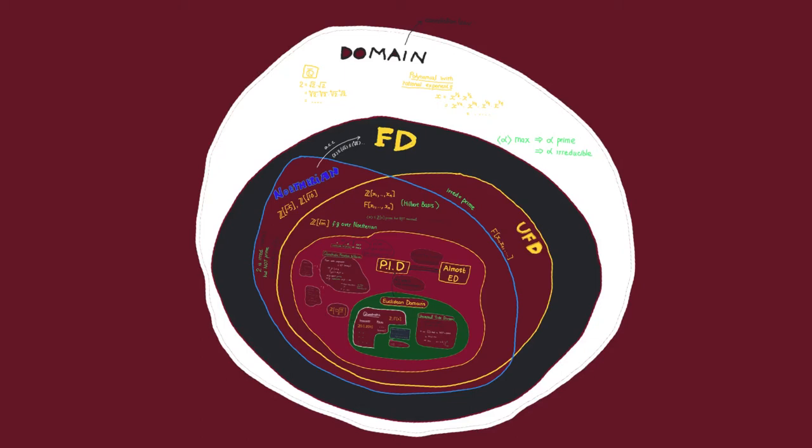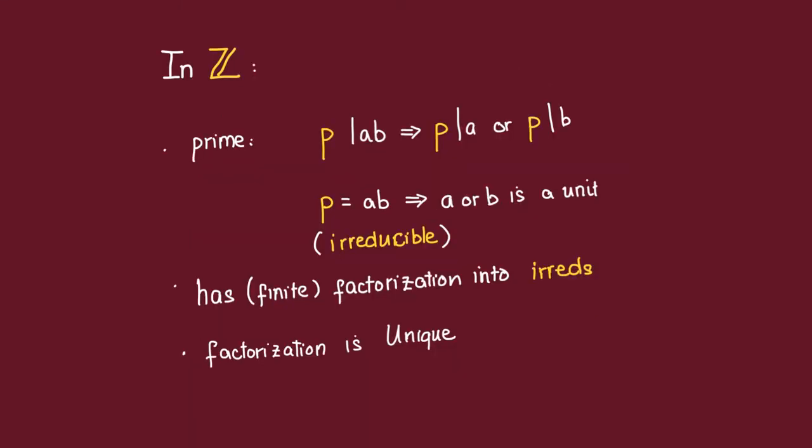Let's do a quick review about factorization in integral domains. We were spoiled with the integers, because in the integers there are several coincidences. In the integers, primes and irreducibles are the same thing.